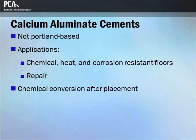Calcium aluminate cement is not a Portland-based cement, but can be combined with Portland cement to make rapid setting concretes and mortars. Typically, applications of calcium aluminate cement include floors that need to be chemically resistant, heat resistant, or corrosion resistant, as well as repair applications. Calcium aluminate cement is often used in non-structural applications and rarely in structural applications.